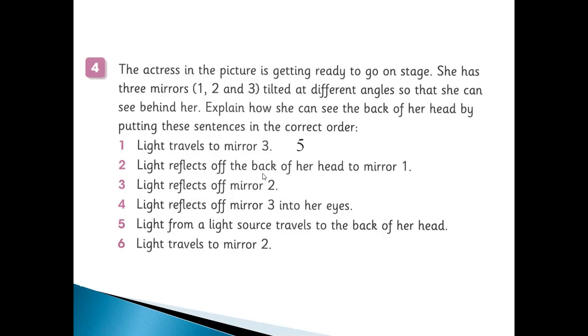First of all, number five: light from a light source travels to the back of her head. Because first of all, if there is darkness, you cannot see any object. If there is light, so the first thing, light travels from the light source to the object. The object is the back of her head. She wants to look at her head from the back side.